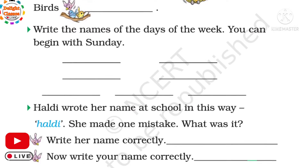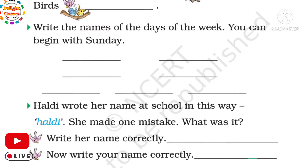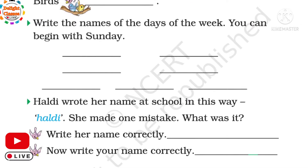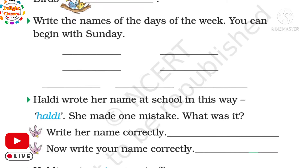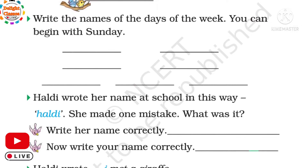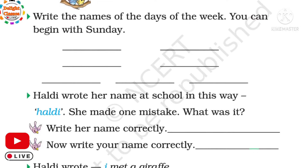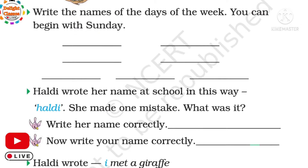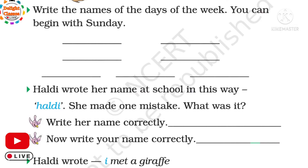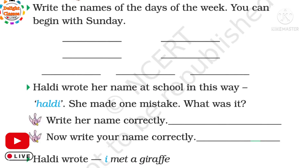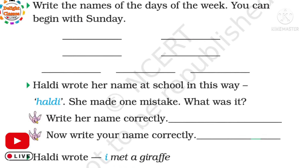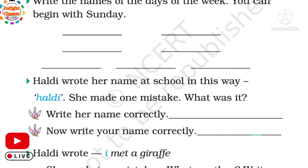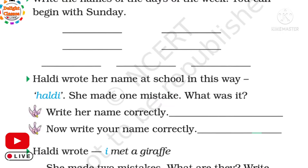Next question, children. Haldi wrote her name at school in this way. She made one mistake. What was it? The mistake is Haldi has started her name with a small letter H. So write her name correctly — capital H-A-L-D-I, Haldi. Okay? Now you have to write your name correctly too.